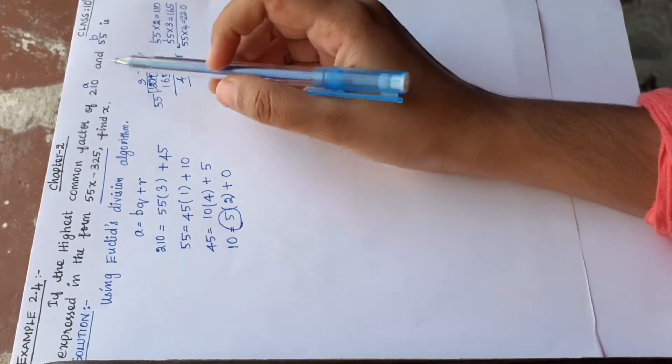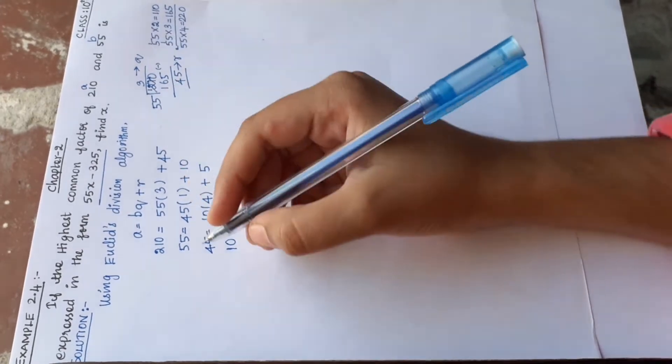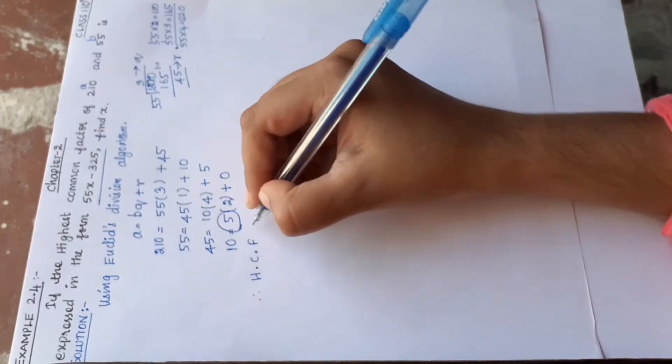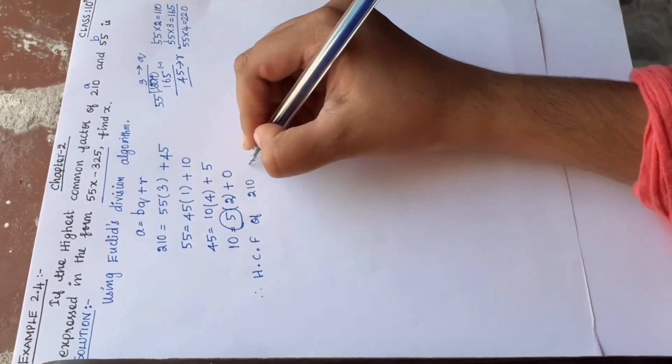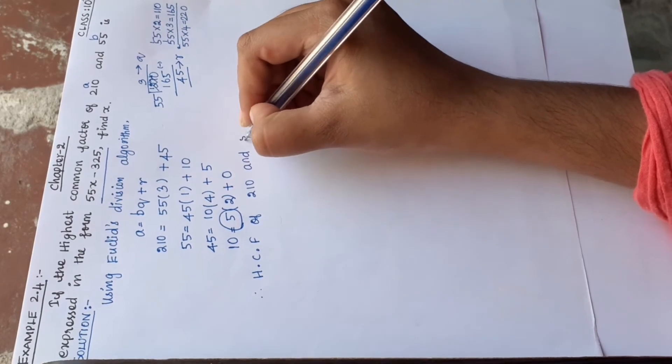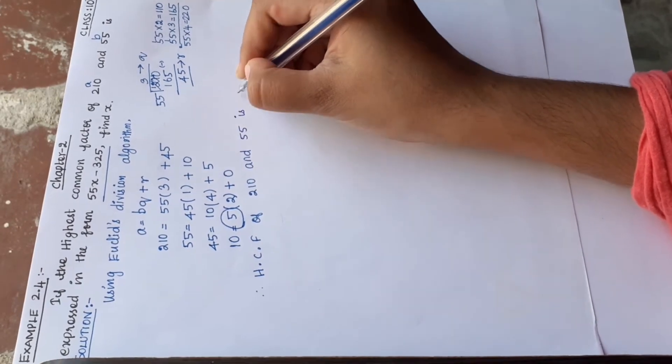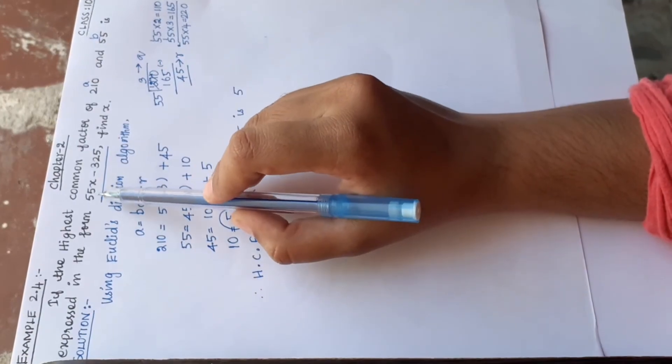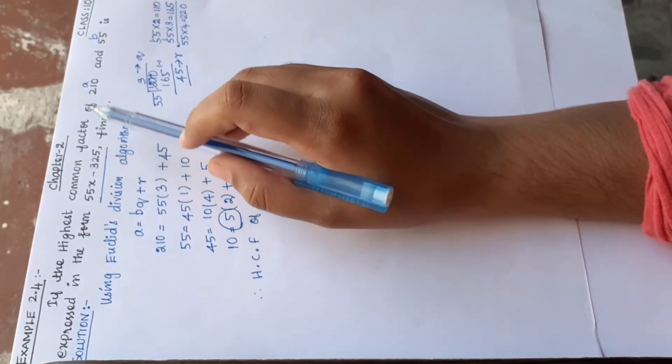So the last divisor is the HCF of 210 and 55. Therefore, the highest common factor of 210 and 55 is 5.